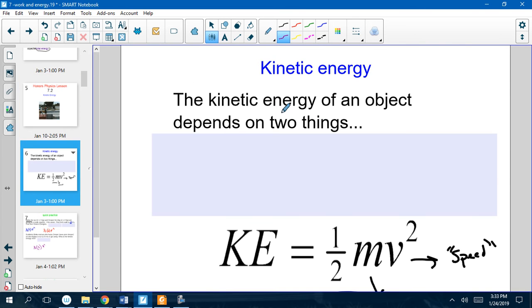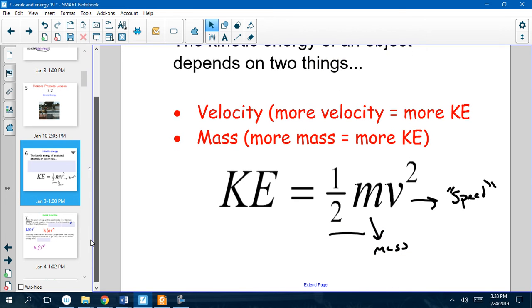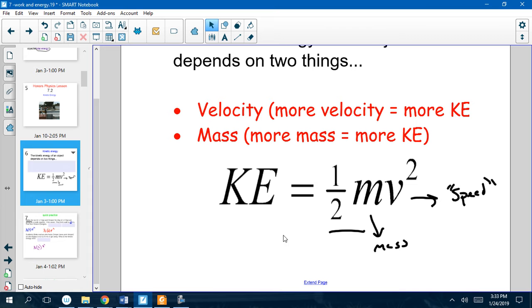So, kinetic energy, we're going to be looking at the energy of motion, and it depends on two things, our velocity and our mass. Formula-wise, kinetic energy equals half of our mass times our velocity squared.